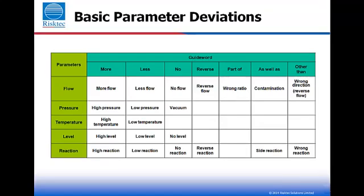Some of the fundamental process-related parameters and guide words and deviations are given in this chart. For example: more flow, less flow, no flow, reverse flow, high pressure, low temperature. Can you think of any more examples?